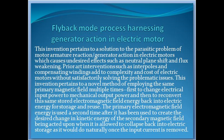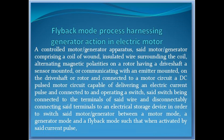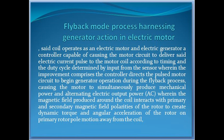The primary electromagnetic field energy is used a second time after it has been used to create the desired change in kinetic energy of the secondary magnetic field being acted upon, when it is allowed to collapse back into electric storage as it would do naturally once the input current is removed. A controlled motor-generator apparatus comprising a coil of wound insulated wire surrounding alternating magnetic polarities on a rotor having a driveshaft, a sensor mounted or communicating with an emitter mounted on the drive shaft or rotor and connected to a motor circuit, a DC pulsed motor circuit capable of delivering an electric current pulse, connected to and operating a switch. Said switch is connected to the terminals of said wire, disconnectively connecting said terminals to an electrical storage device in order to switch said motor generator between a motor mode, a generator mode, and a flyback mode, such that when activated by said current pulse, said coil operates as an electric motor and electric generator.